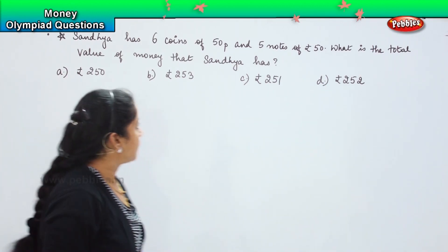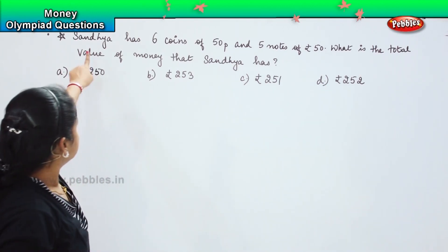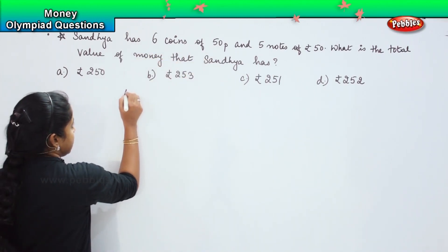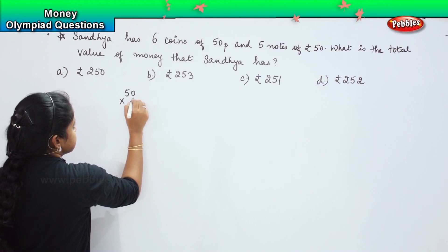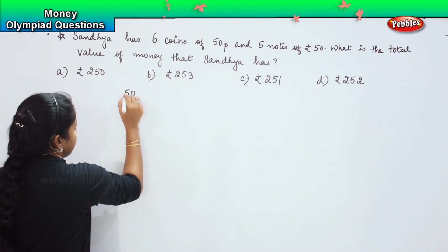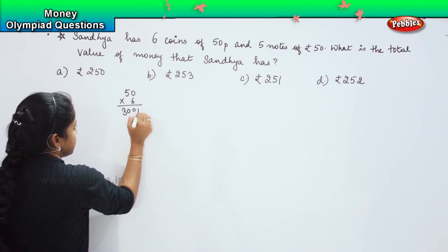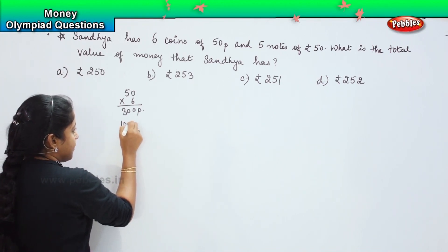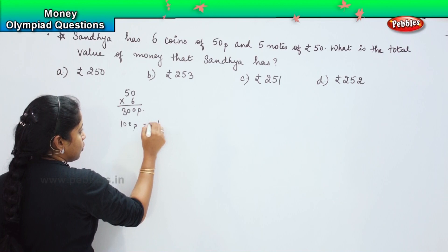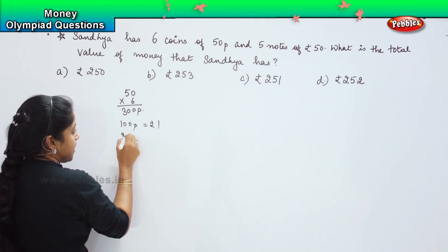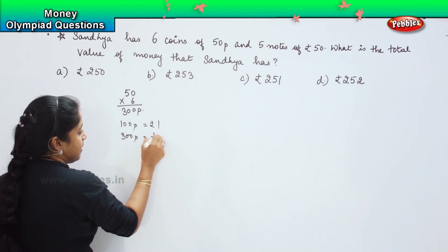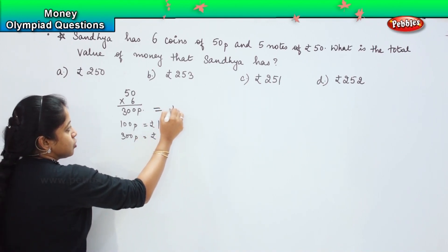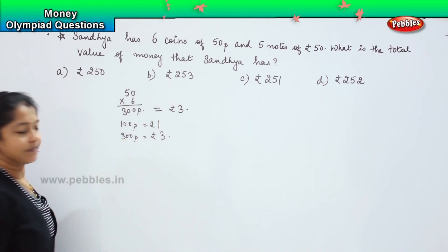We need to multiply and calculate. Sandhya has 6 coins of 50 paise, so 50 into 6 — 6 threes are 30 — which means she has 300 paise. We already know that 100 paise makes 1 rupee, so 300 paise will make 3 rupees. This equals 3 rupees.